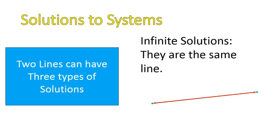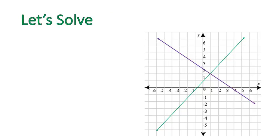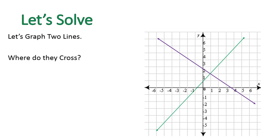Then they would have an infinite number of solutions — every point on both lines is a point on both lines. So let's look at a couple of examples. When we're asked to solve an equation, we graph the two lines or we are given a graph of two lines, we ask ourselves where they cross, and then we're done. Here's an example: where do they cross? Right there at the point (1, 2). That's how we would solve it if we were given a graph.